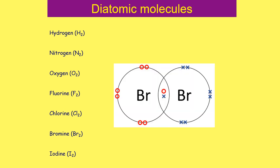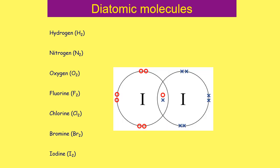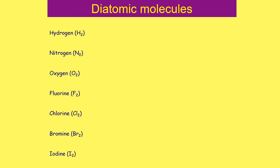Bromine is another halogen with seven electrons in its outer shell. Just like fluorine and chlorine, each bromine atom shares one electron, giving each bromine atom eight electrons in its outer shell and forming one covalent bond. Iodine likewise has seven electrons each, shares one each, forms one covalent bond, and each iodine ends up with eight electrons. To summarise: hydrogen forms one covalent bond, nitrogen forms three, oxygen forms two, and the halogens — fluorine, chlorine, bromine, and iodine — all form one covalent bond.